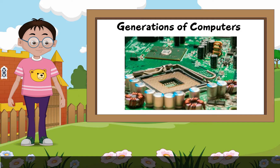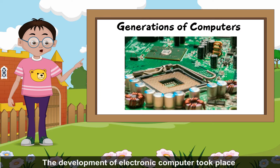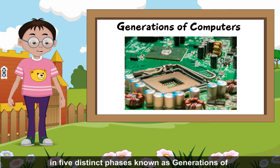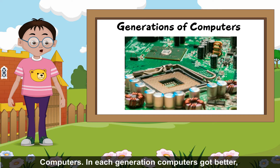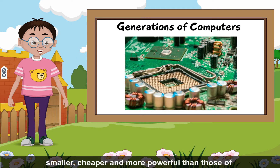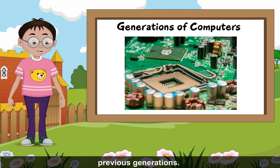Generations of Computers: The development of the electronic computer took place in five distinct phases, known as generations of computers. In each generation, computers got better, smaller, cheaper, and more powerful than those of previous generations.